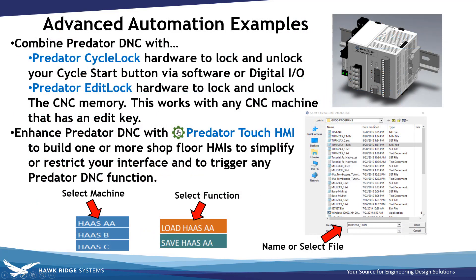Combine Predator DNC with Predator CycleLock — hardware to lock and unlock your cycle start button. We also have Predator EditLock, hardware to lock and unlock the CNC memory, which works with any CNC machine that has an edit key. You can also enhance Predator DNC with Predator Touch HMI to build one or more shop floor HMIs to simplify or restrict your interface and trigger any Predator DNC function. Customize the buttons to suit your needs — in this example you have a list of machines, a list of tasks or functions, then file naming or selection to send, receive, or translate.